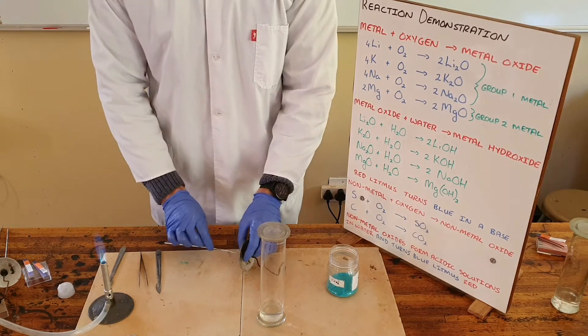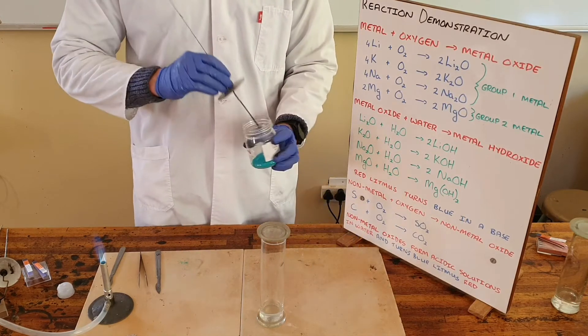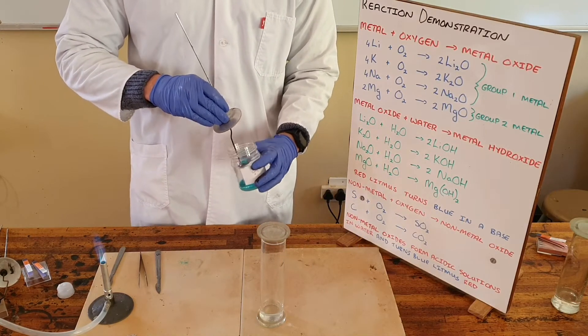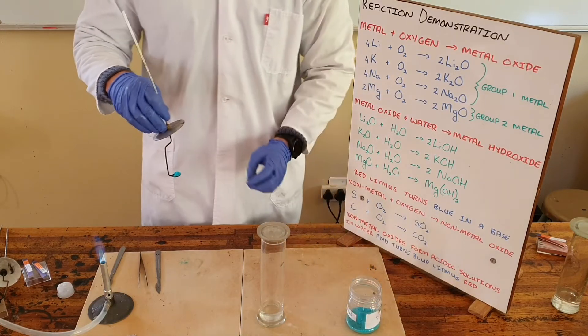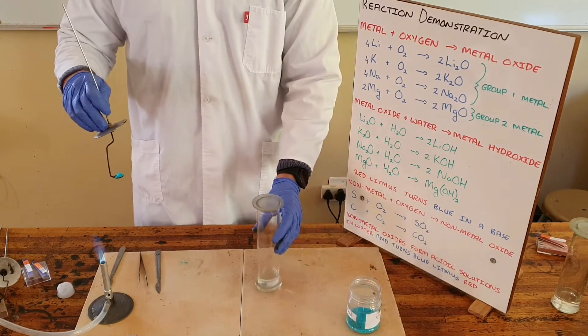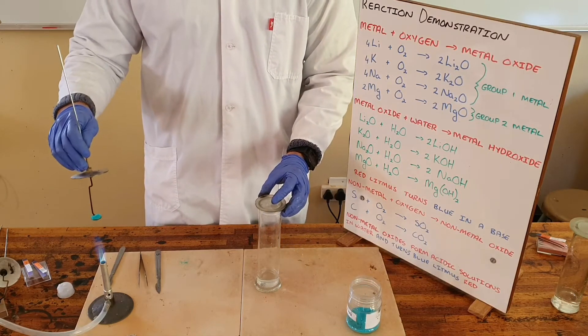What we're going to do now is demonstrate how a compound, in this case copper chloride, which is a combination of a metal and a nonmetal, which we would also call a salt, is burnt and combined with oxygen just to show that compounds also do react with oxygen.